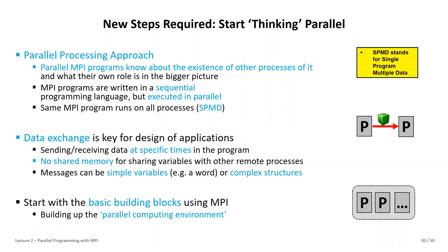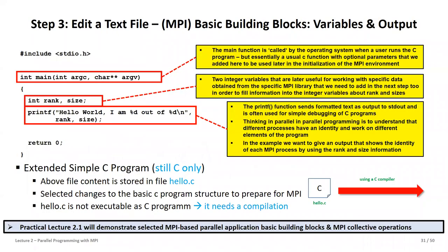There are basic building blocks of using MPI all the time: MPI_Init, for instance, which always starts a parallel computing environment. We need to identify what processes are actually needed. So we start by editing the text file from the C program.